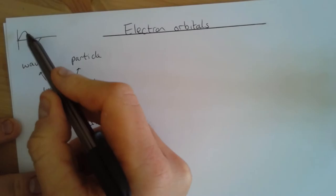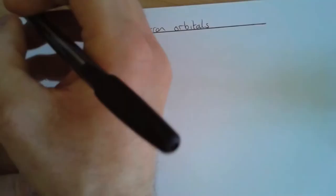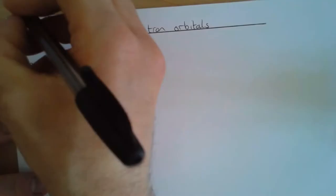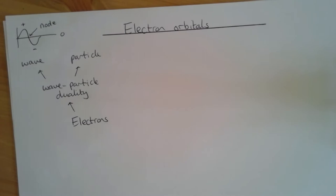A reminder about describing waves: there's a longitudinal wave, and we need to recognize that this represents a positive displacement and this represents a negative displacement. The point at which the wave is crossing the zero line we call a node — we're going to need to use that later on.